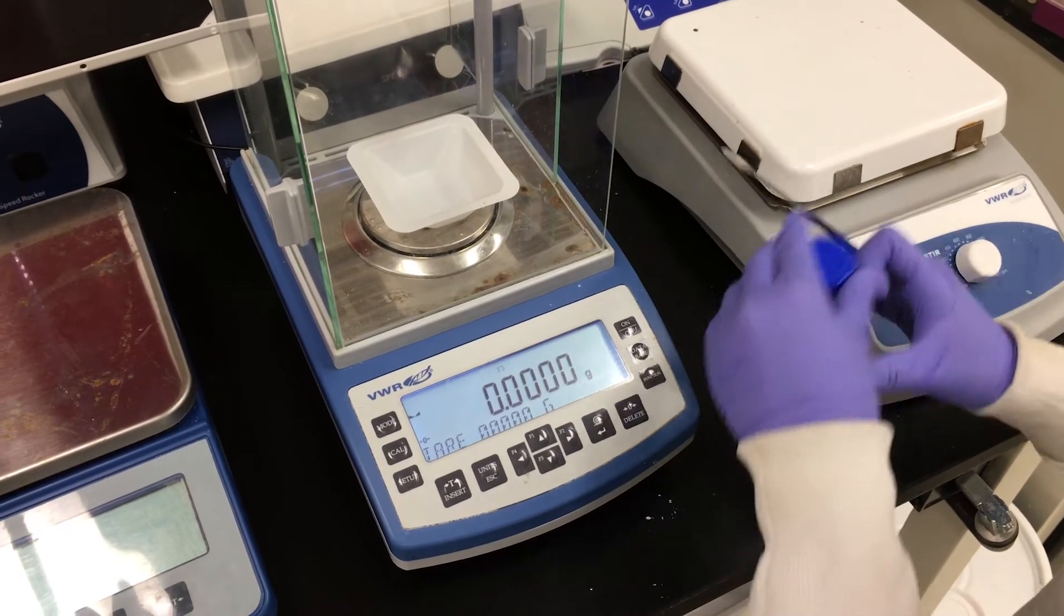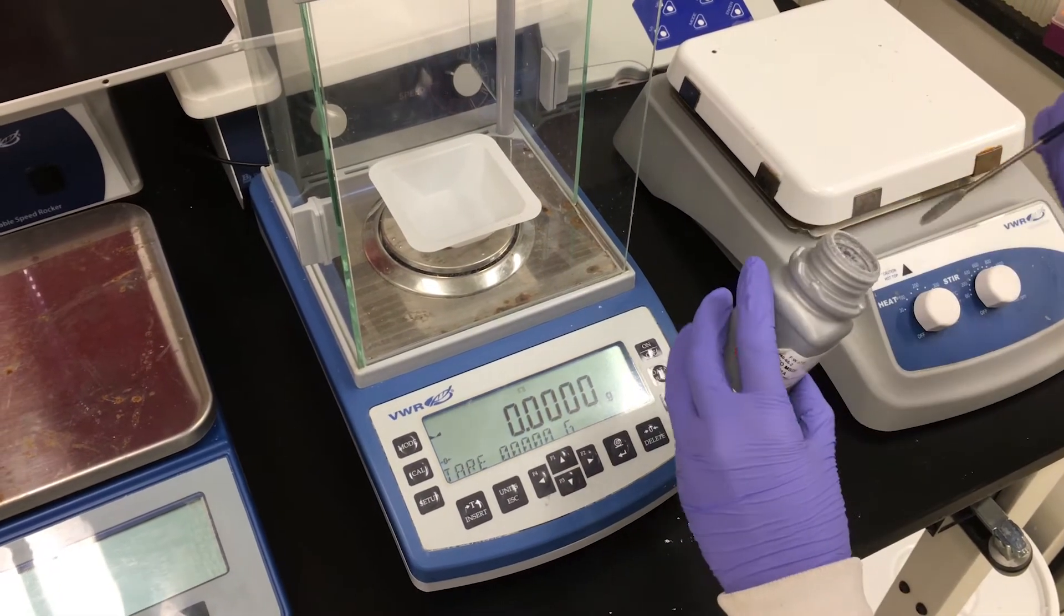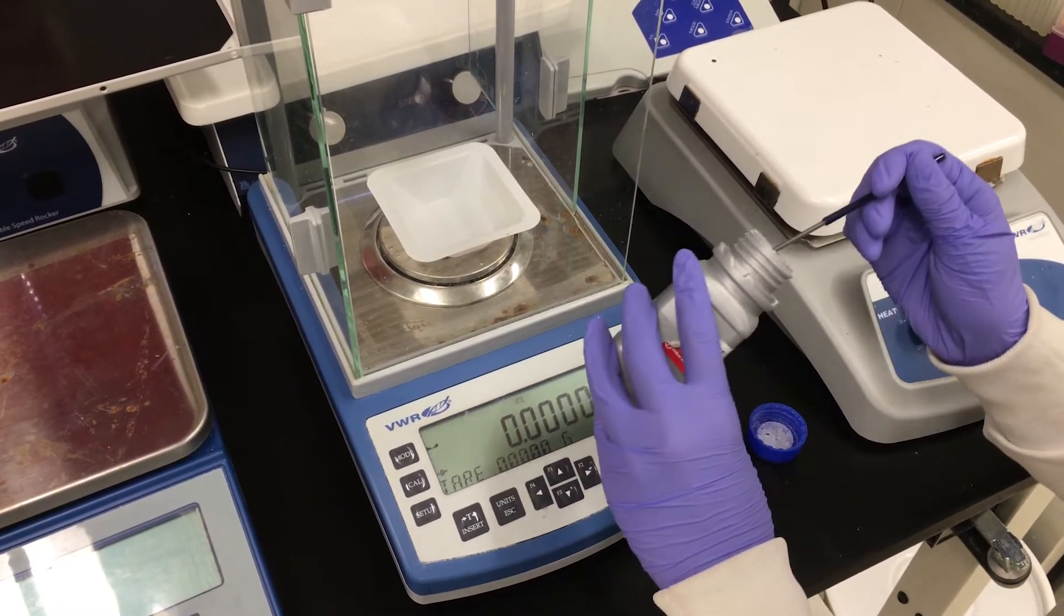Using a metal spatula, carefully weigh out sodium borohydride onto your weigh boat. Ensure that you do not spill any of this powder.